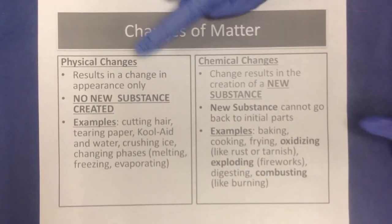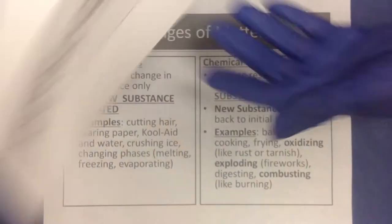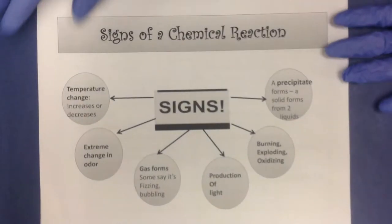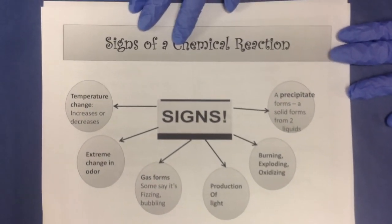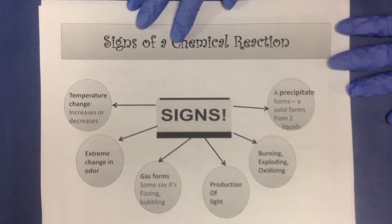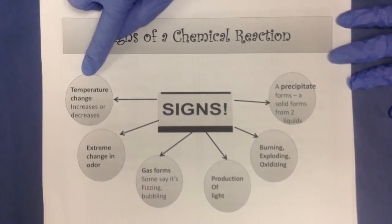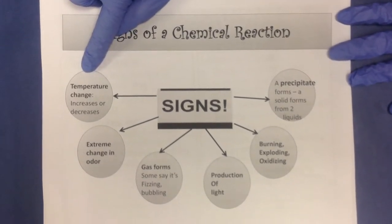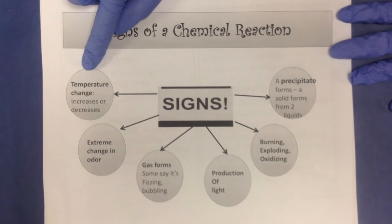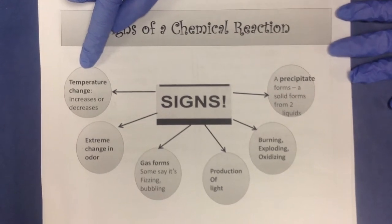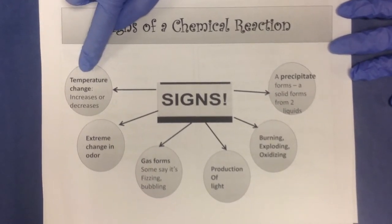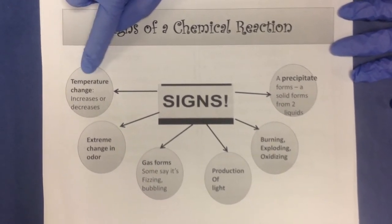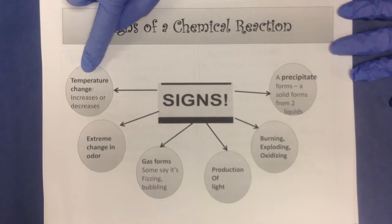Let's look at signs of a chemical reaction before we actually do them. Here are the signs. We're looking for changes in temperature — an increase or a decrease when we mix two things together, without adding any additional changes.